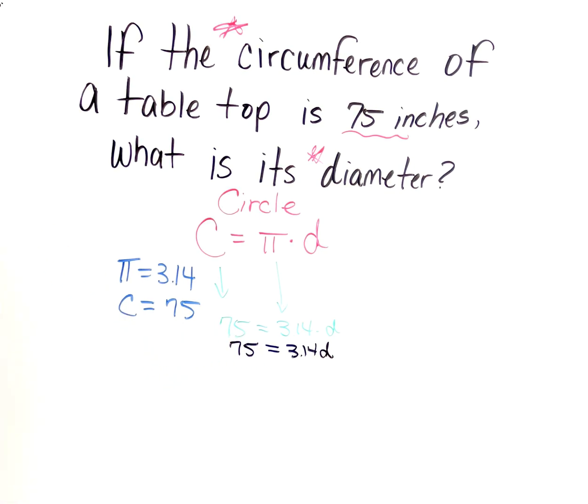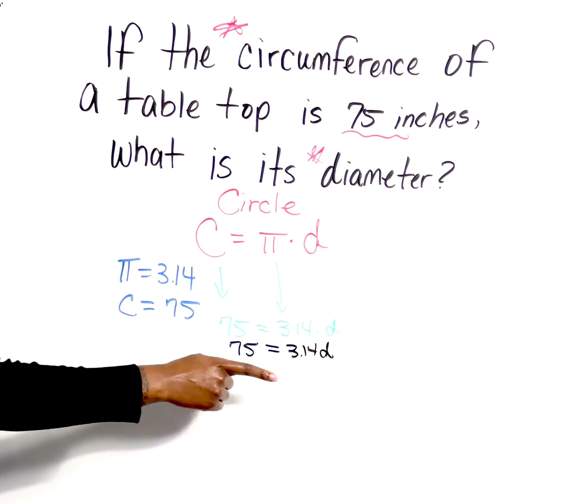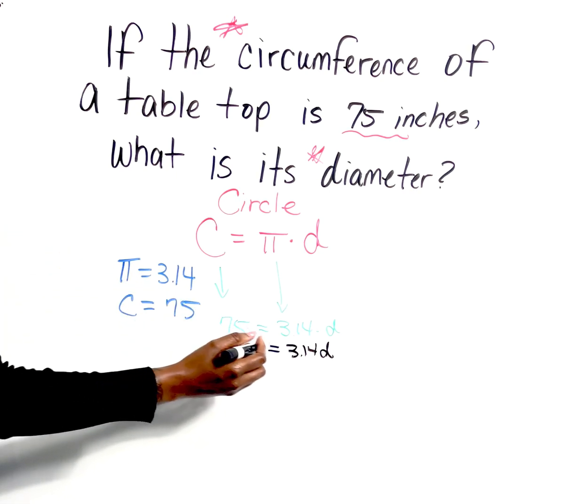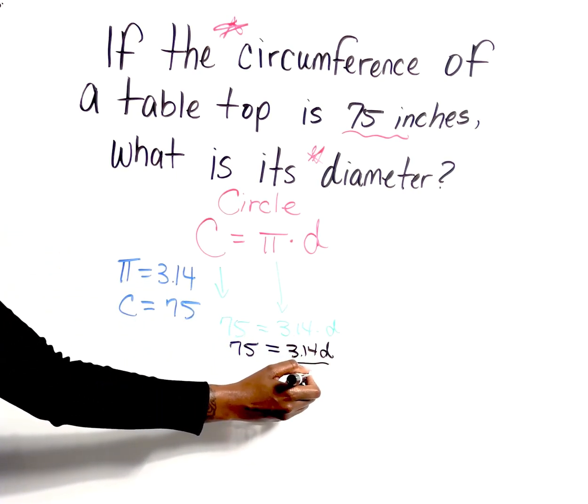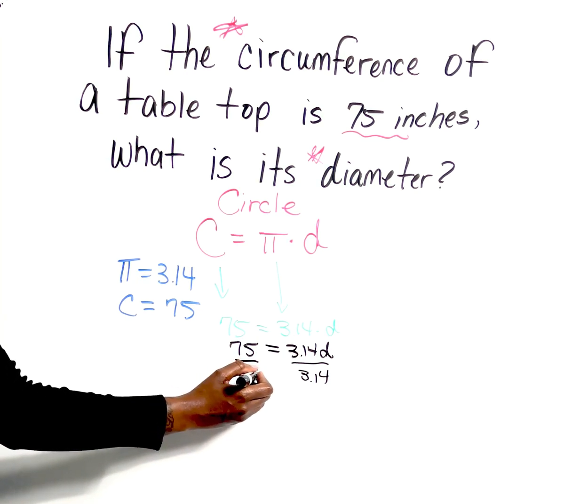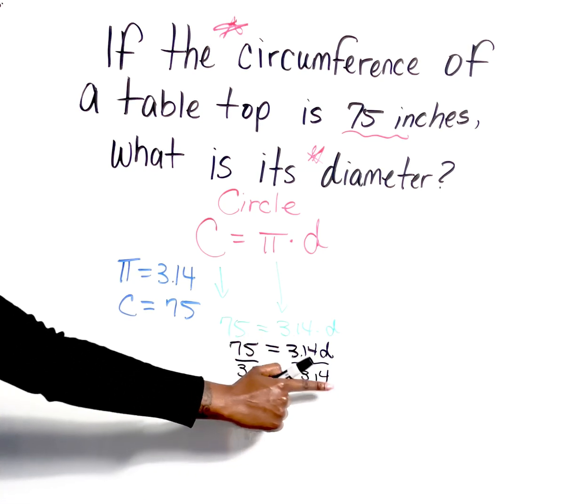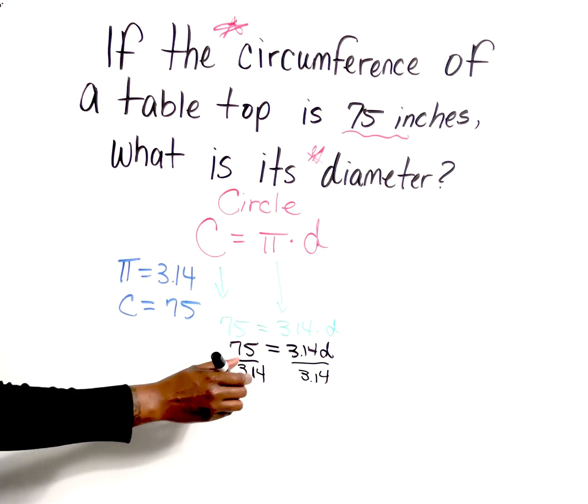Anytime we're solving equations, do the opposite of what you see. So 3.14 and d are multiplied together. If I want to separate them, I'm going to do the opposite of that, which is divide. It's going to divide both sides. You always do the same thing twice—the equal sign lets us know we have to keep a balance.